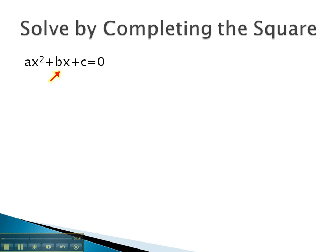ax squared plus bx plus c equals 0, where a, b, and c, we will assume are numbers. x is the variable we are solving for.